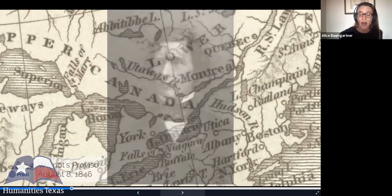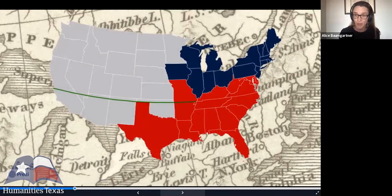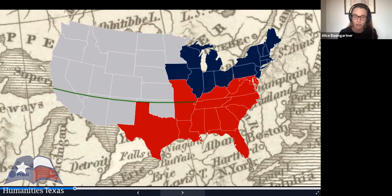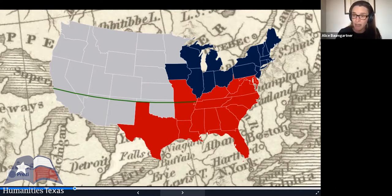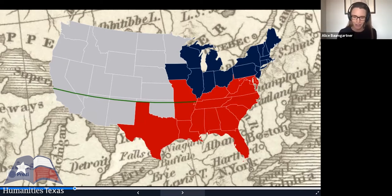Southern congressmen were up in arms about this proviso because it threatened to upset the balance of power between North and South. In 1846, there were 15 free states and 15 slave states. If the conquered Mexican territories were organized as free territories, then basically all of the remaining Western territories would be closed to slavery — the Oregon Territory already prohibited slavery, and the remaining Louisiana Purchase territories prohibited slavery north of 36°30' under the Missouri Compromise of 1820.